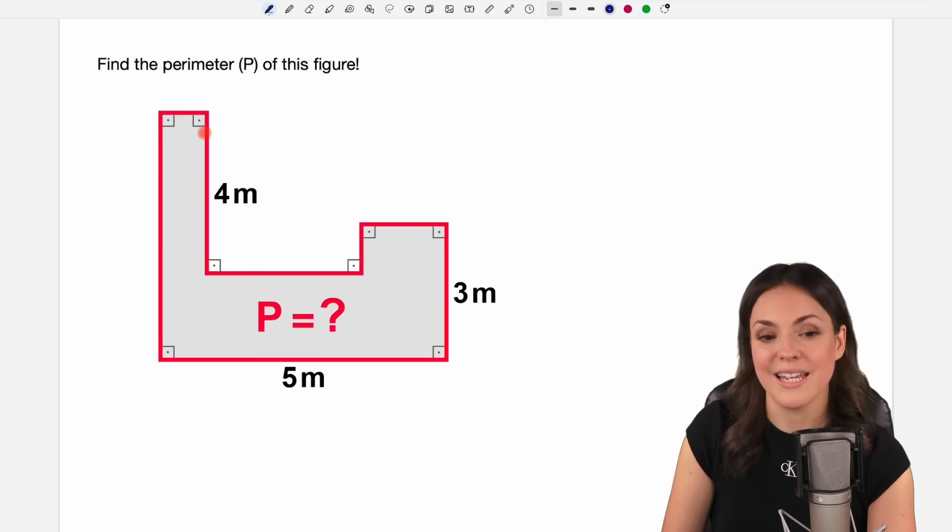The problem here is that we only get the length of this side, of this side and of this side. We don't know the length of the other sides, so we don't even know if it's possible to find the perimeter, but we will see. Let's try it.